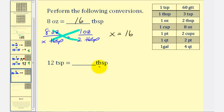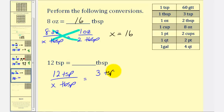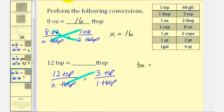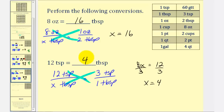Next we want to convert twelve teaspoons to tablespoons, so we'll have two ratios comparing teaspoons to tablespoons. The conversion is one tablespoon equals three teaspoons, so we'll have three teaspoons over one tablespoon. Notice how the units are the same on the top and on the bottom. Cross multiply: x times three would be three x, equals twelve times one, which is twelve. Divide both sides by three, and we have x equals four. So twelve teaspoons equals four tablespoons.